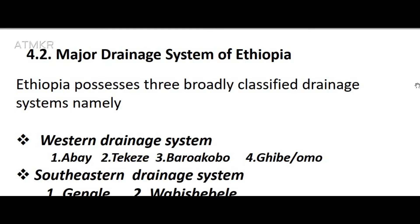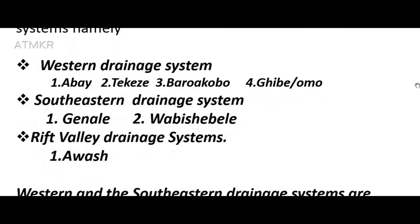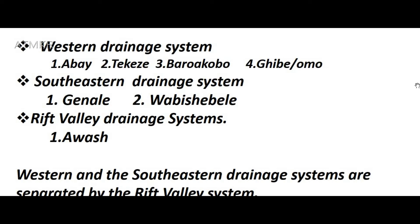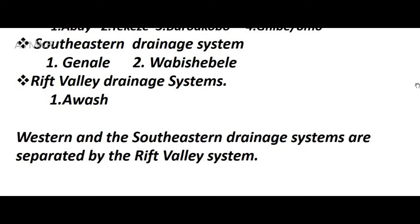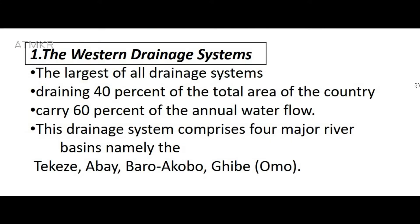Section 4.2: Major Drainage Systems of Ethiopia. Ethiopia possesses three broadly classified drainage systems: the Western Drainage System (comprising Abbae, Takiz, Barro/Akobo, and Gibe/Omo), the Southeastern Drainage System (comprising Ghanal and Wabashabale), and the Rift Valley Drainage System (comprising Awash). The western and southeastern drainage systems are separated by the rift valley system.